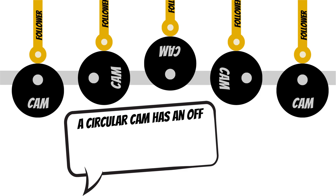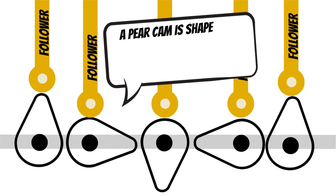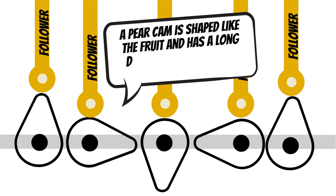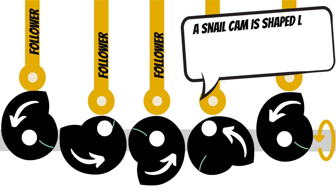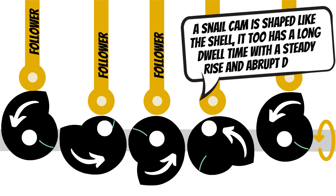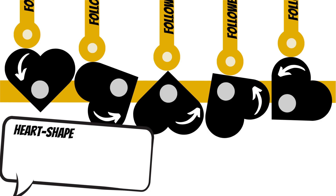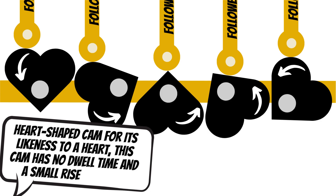Let's quickly recap those four cams. A circular cam has an off-centred circle shape which produces a steady rise and fall. A pear cam is shaped like a fruit and has a long dwell time with a rapid rise and fall. A snail cam is shaped like a shell — it too has a long dwell time with a steady rise and abrupt drop. A heart shaped cam has no dwell time and has small rises and falls.